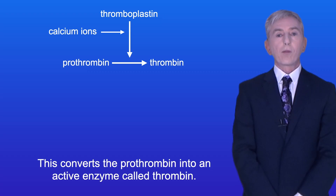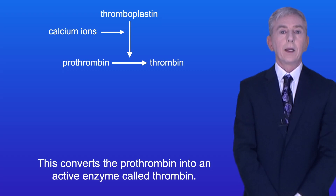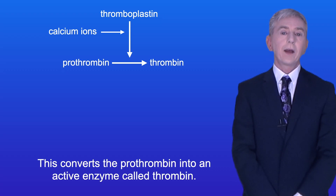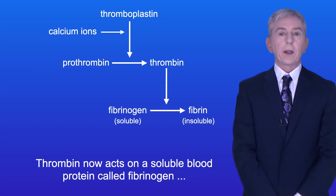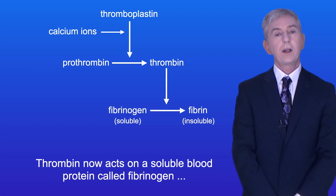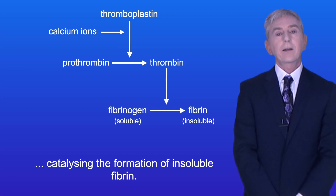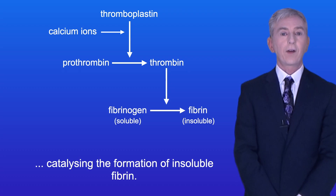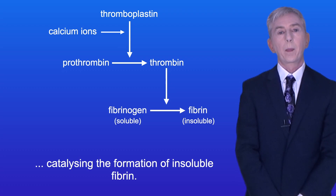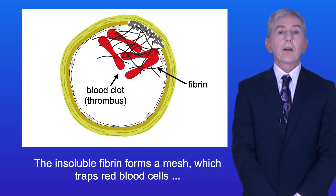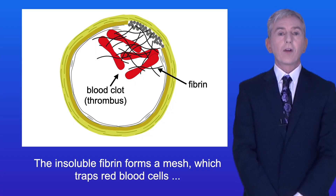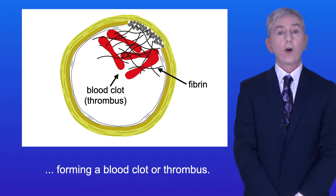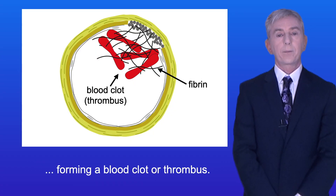This converts the prothrombin into an active enzyme called thrombin. Thrombin now acts on a soluble blood protein called fibrinogen, catalyzing the formation of insoluble fibrin. The insoluble fibrin forms a mesh which traps red blood cells, forming a blood clot or thrombus.